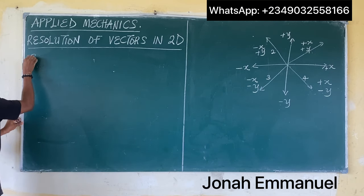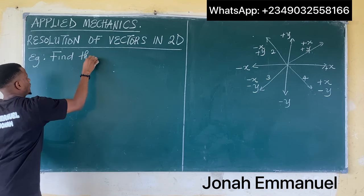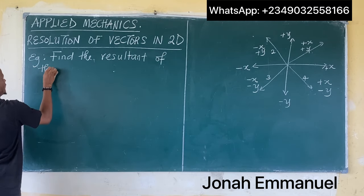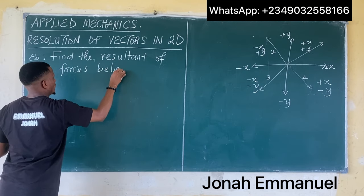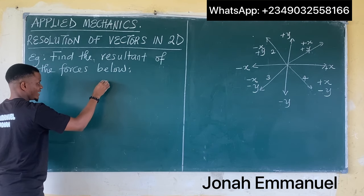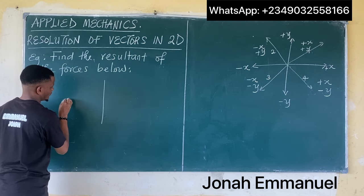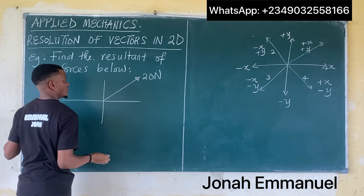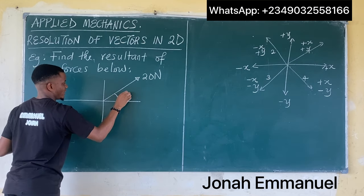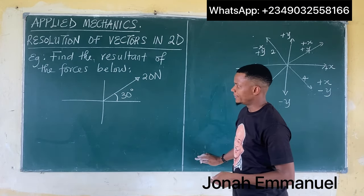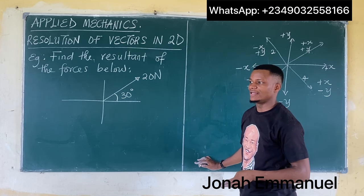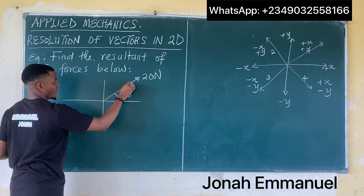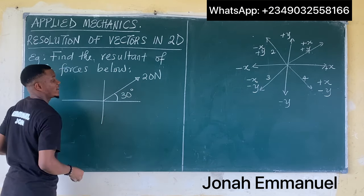Let's combine both conditions to solve problems on resolution of vectors. Example: find the resultant. Let's start with something easy. I have a force of 20 Newtons inclined at 30 degrees. We have to resolve this force into both the horizontal and vertical components. This force is in the first quadrant, in which both X and Y are positive. The angle of inclination is to the horizontal.